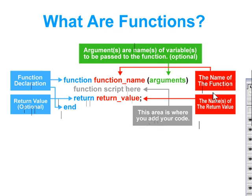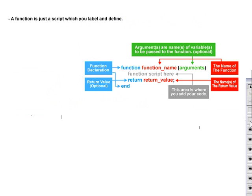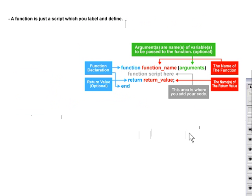A function is just a script which you label and define. Basically a function is just a line of code or a series of lines of code which you can define by a name and by which variables get passed to and from that function. So it's a very simple thing actually when you think about it that way.